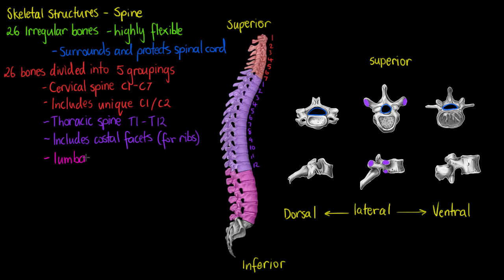The next and last segment of our freely movable vertebrae is the lumbar spine. The lumbar spine has five components, so L1 to L5. And as we can see, the lower we get into the spine, the thicker these bones are becoming to support the weight of our torso.